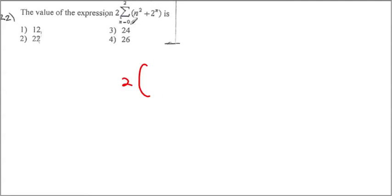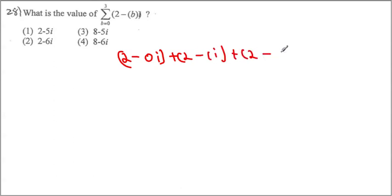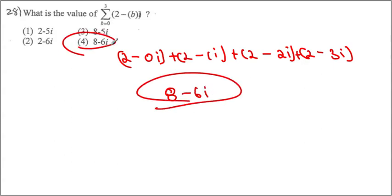2 is already there. Once you plug in 0, this becomes 0, so it's 1. When n equals 1, this becomes 1 and this becomes 2, so it becomes 3. When n equals 2, this becomes 4 plus 4, which is 8. So we get 2 minus 0i, plus 2 minus 1i, plus 2 minus 2i, plus 2 minus 3i. Adding them up: 8 minus 6i becomes our answer, choice 4.